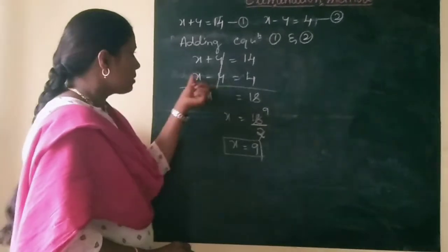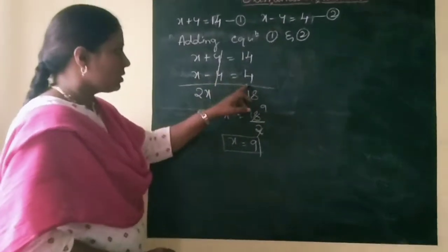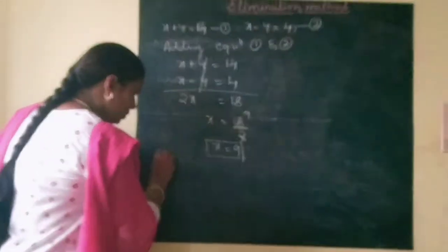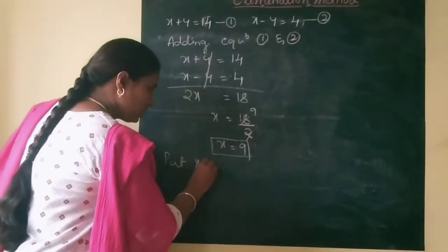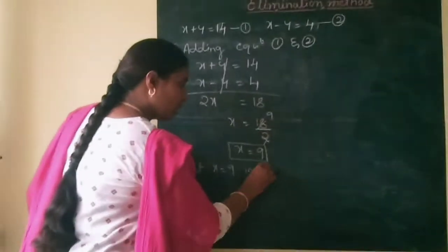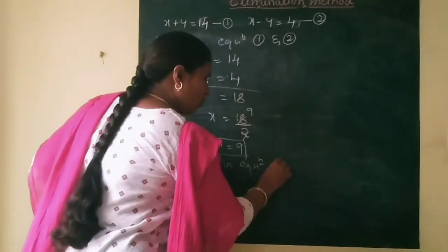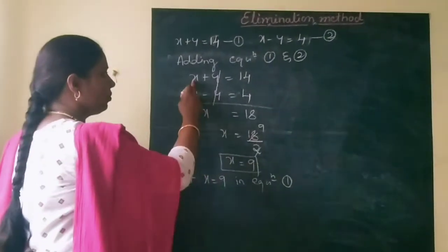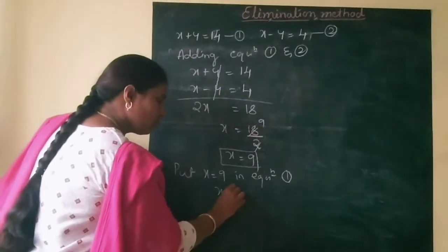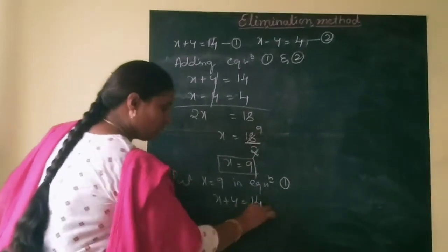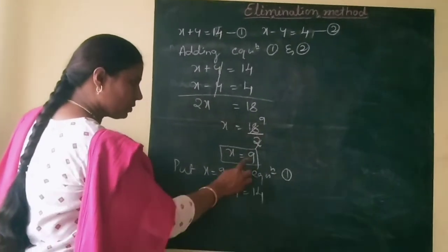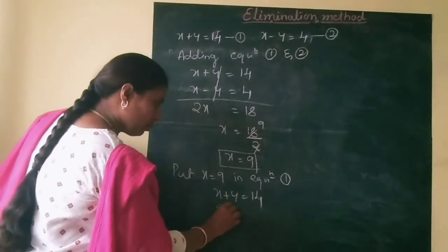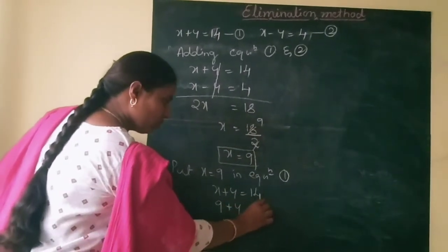Our equations are x plus y is equal to 14 and x minus y is equal to 4. We found x is equal to 9. Now we put x equal to 9 into equation 1 and substitute. Equation 1 is x plus y is equal to 14, so substituting x is equal to 9.